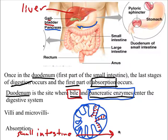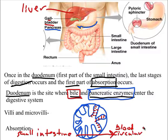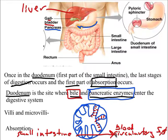The villi and microvilli absorb things from the digestive system into the blood — specifically the circulatory system. That exchange from the digestive system to the circulatory system happens at capillaries.